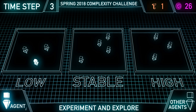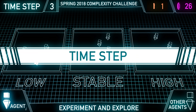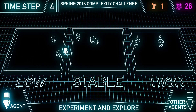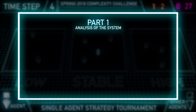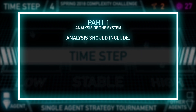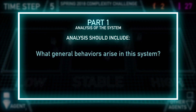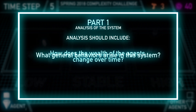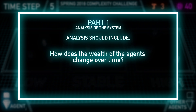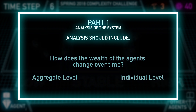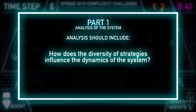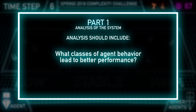Explore the general dynamics of the above system using a diverse set of agents — that is, agents that have different rules for deciding which pools to invest in. Part one: analysis of the system. Your analysis should include but is not limited to discussing the following questions: What general behaviors arise in this system? How does the wealth of the agents change over time, at the aggregate level and at the individual level? How does the diversity of strategies influence the dynamics of the system? And what classes of agent behavior lead to better performance?